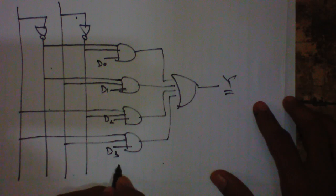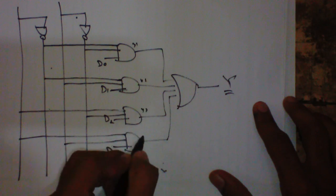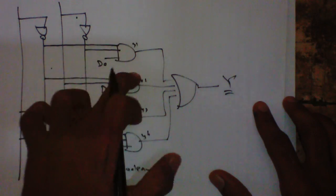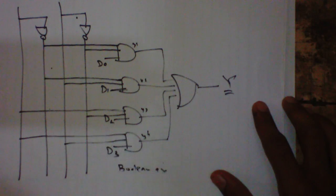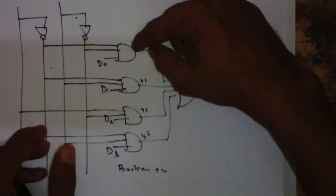Boolean expression for this will be: this is Y1, this is Y2, Y3, Y4. So Y1 plus Y2 plus Y3 plus Y4 will be the boolean expression. So what is Y1? Y1 is nothing but...